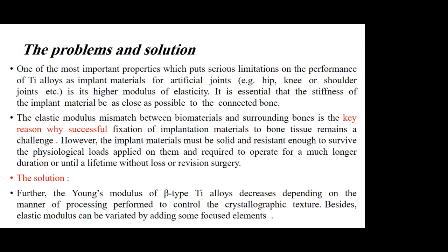One of the most important properties which puts serious limitation on the performance of titanium alloys as implant material for artificial joints such as hip, knee, or shoulder joints is the higher modulus of elasticity of the alloys. It is essential that the stiffness of the implant material be as close as possible to the cortical bone. The elastic modulus mismatch between the biomaterial and the surrounding bone is the key reason why successful fixation of the implant to bone tissue remains a challenge. However, the implant material must be solid and resistant enough to withstand the physiological loads placed on it, and is required to operate for much longer durations or an entire lifetime without loosening or revision surgery.